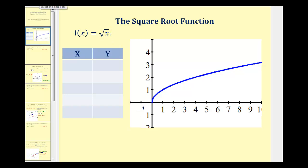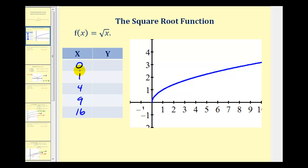For example, zero squared is equal to zero, one squared is equal to one, two squared is equal to four, three squared is equal to nine, and four squared is equal to 16. Now to determine the corresponding y values, we'll perform substitution into the function.